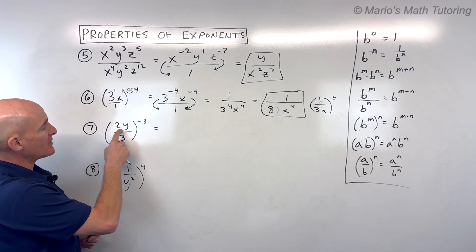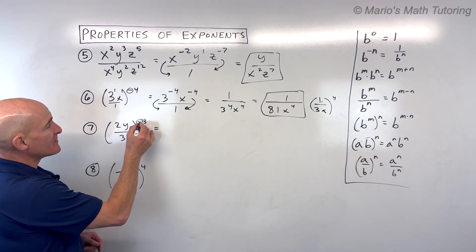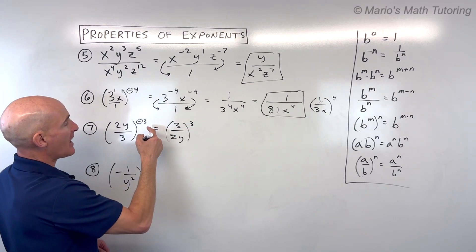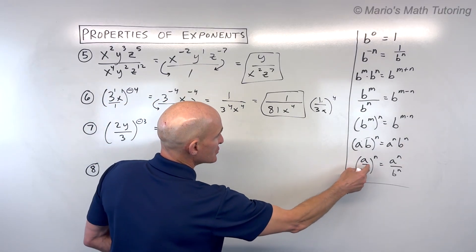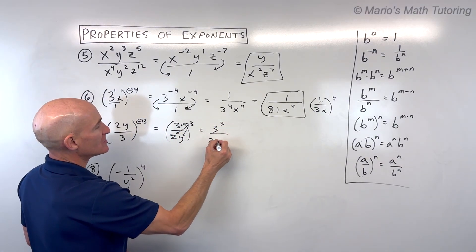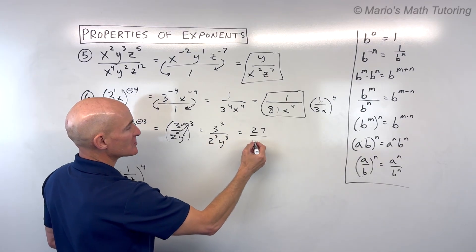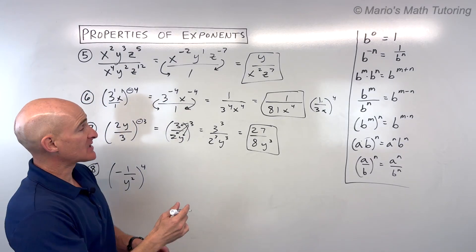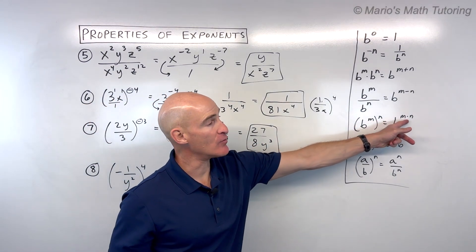For number 7, we have 2y divided by 3 all to the negative 3rd power. Take the reciprocal of the base — that gives 3 over 2y — and raise it to the positive 3rd power; the negative changes to positive when you flip. Now we have a fraction to a power: apply the power to the numerator and denominator. That gives 3 cubed over 2 cubed y cubed, which is 27 over 8y cubed. Remember, if a quantity has no visible exponent, it's understood to be 1.